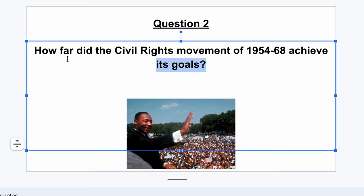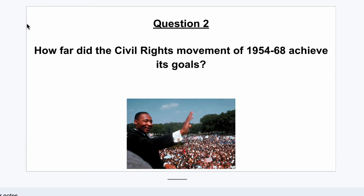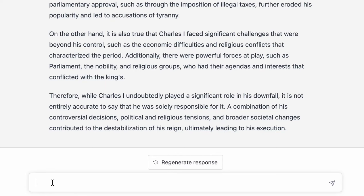Let's have a look at question two — a different topic. How far did the civil rights movement of 1954 to 1968 achieve its goals? I've purposely made this a little bit more vague. Really what we'd be looking for is for a student to define the goals of the civil rights movement and then assess the extent to which the movement was successful in achieving those goals.